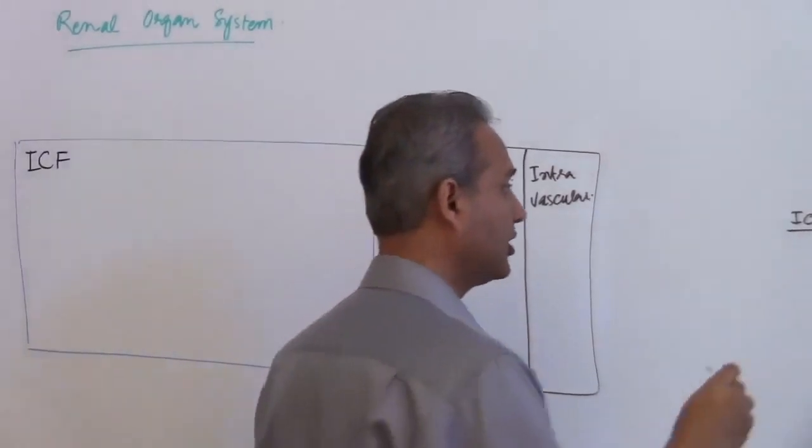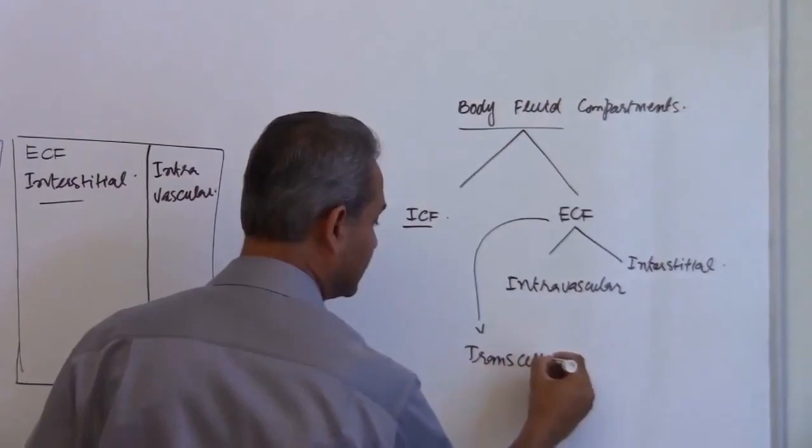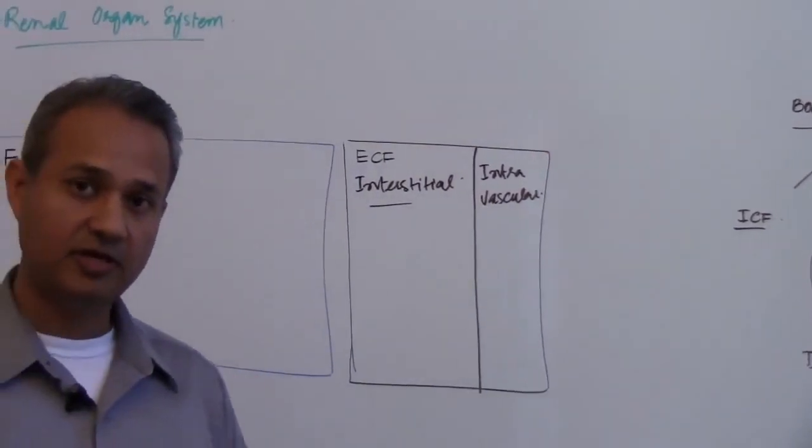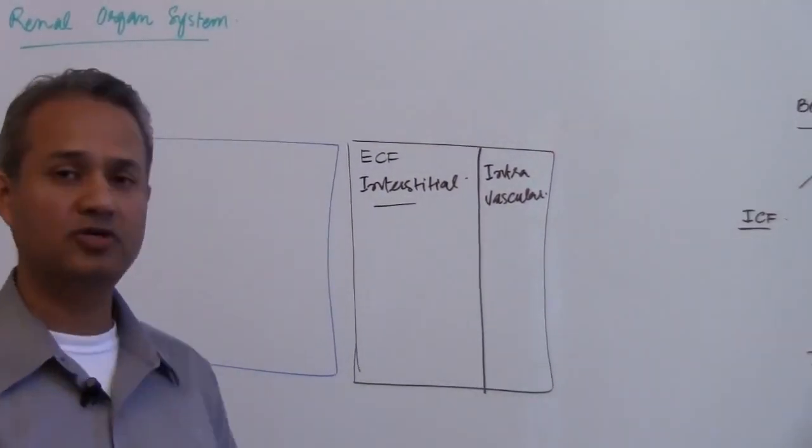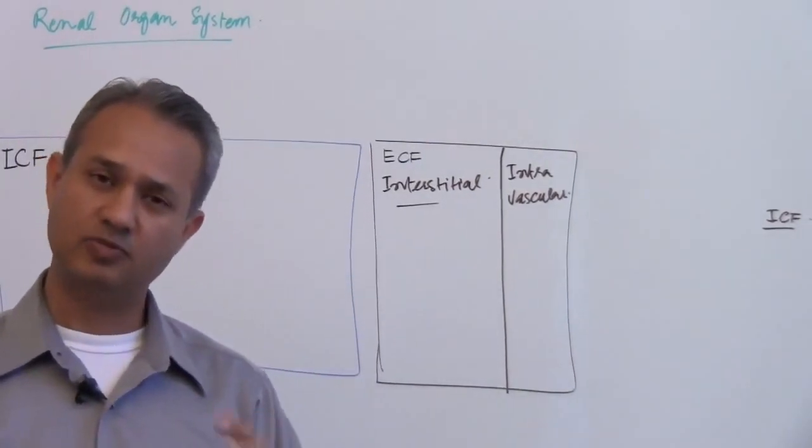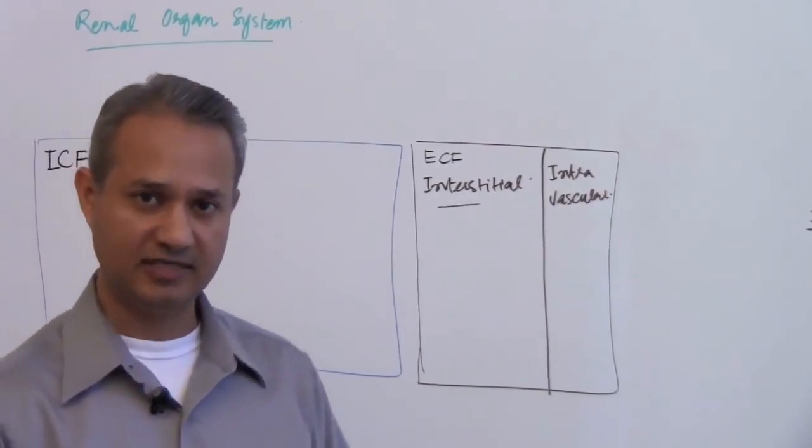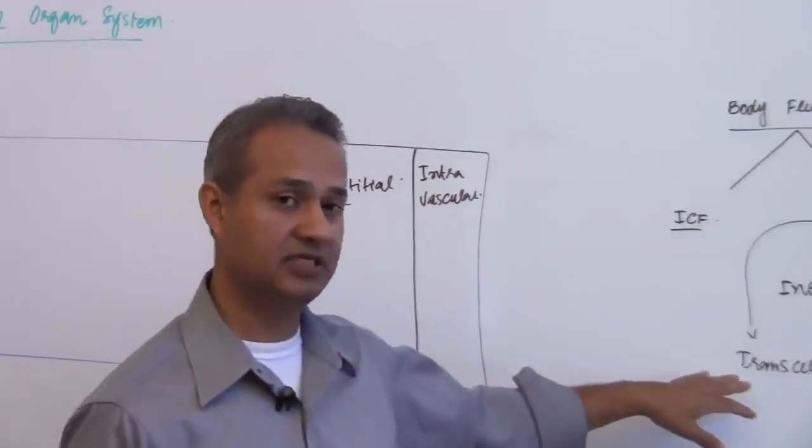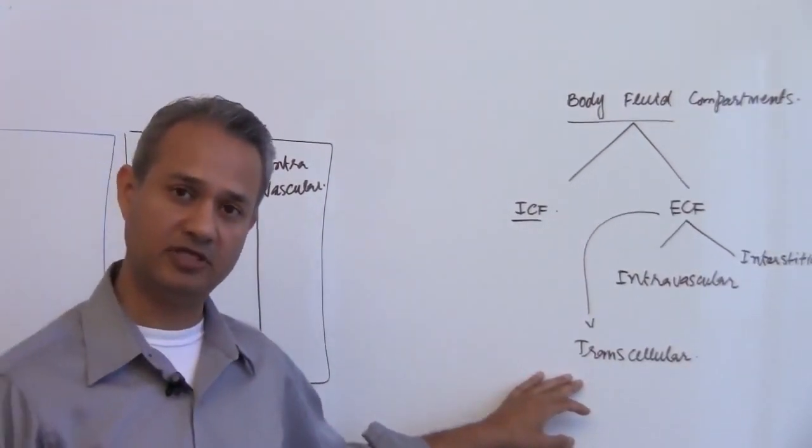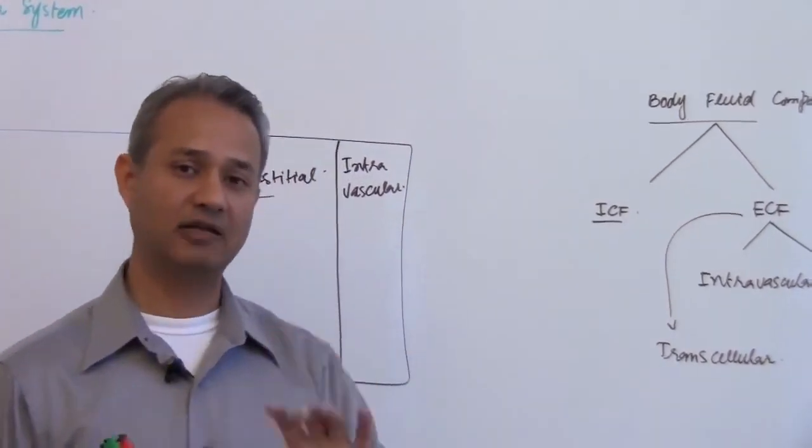Intravascular and interstitial, they both are part of extracellular. There is actually one more extracellular compartment which is called transcellular. It's pretty stable, about two liters of the whole fluid is present in the transcellular. This is the fluid present in a joint cavity, the pericardial sac, the peritoneal sac, CSF and so on. That fluid collectively is called the transcellular fluid.